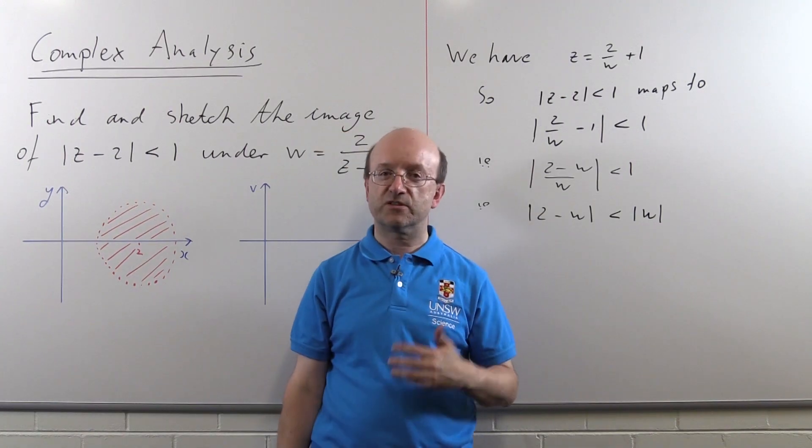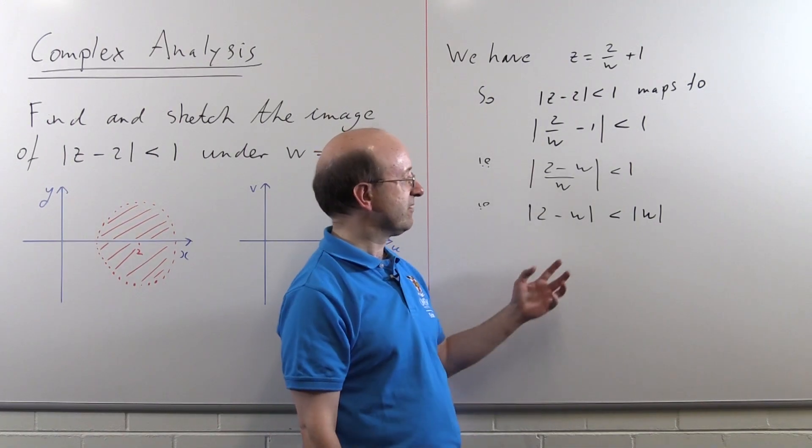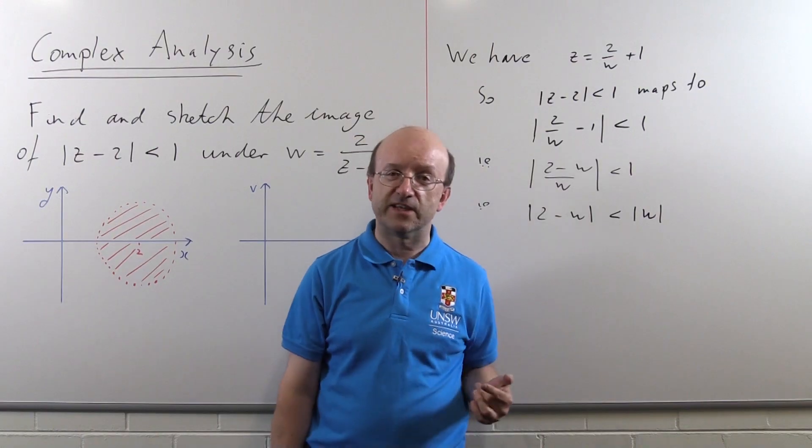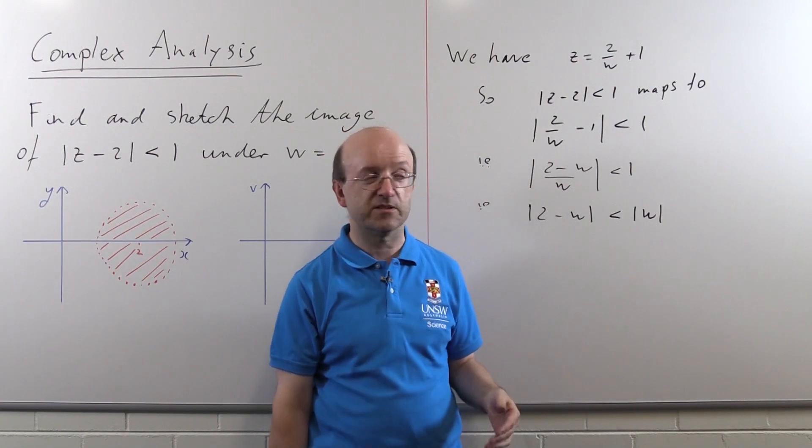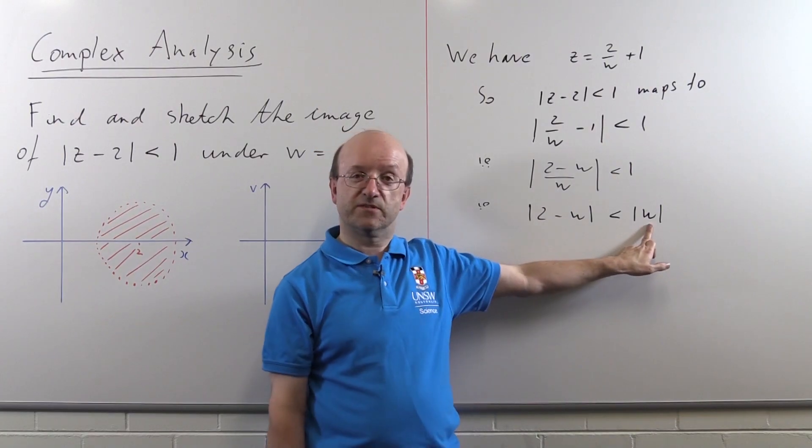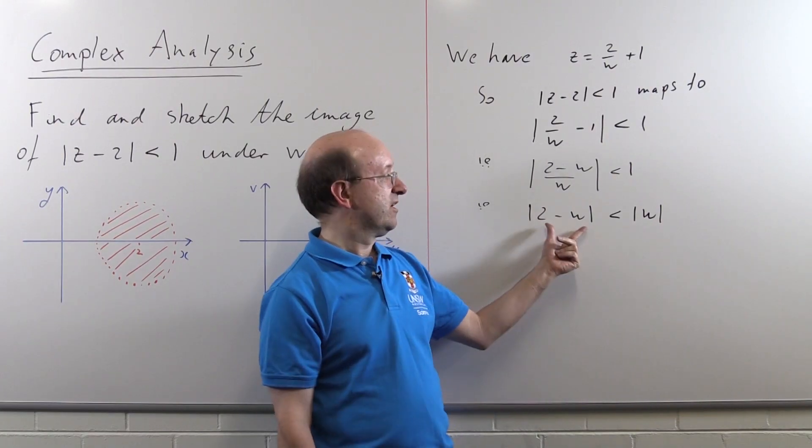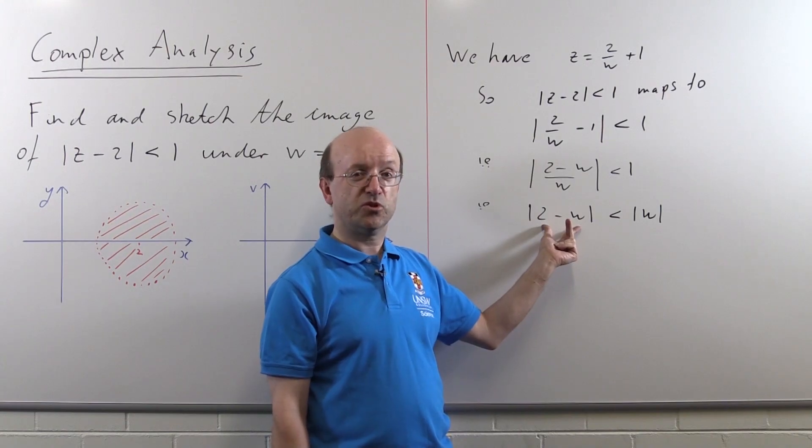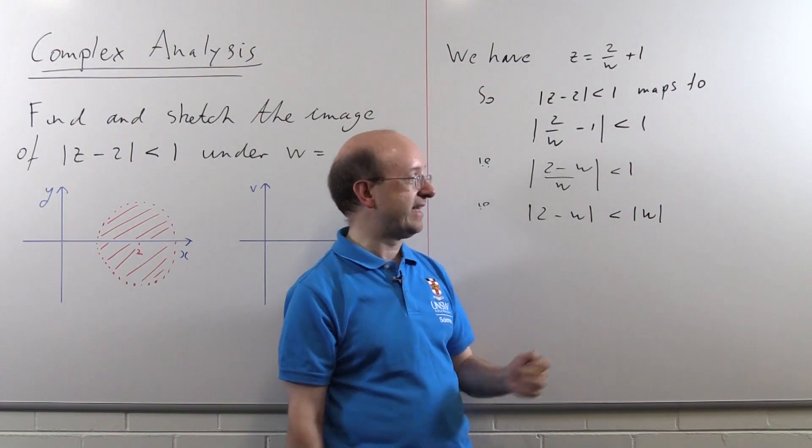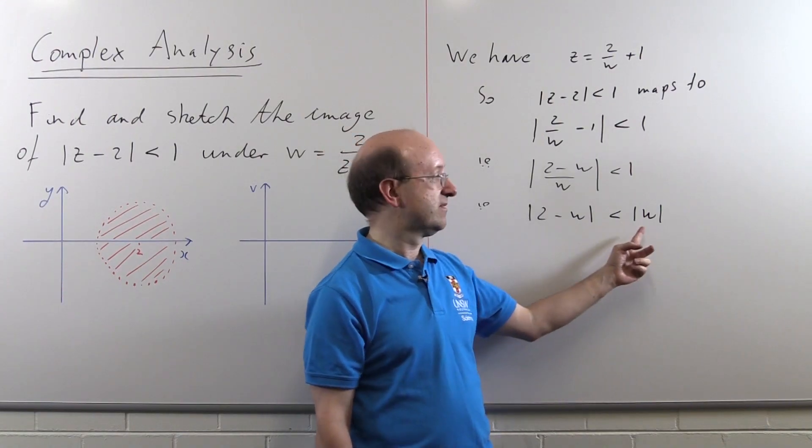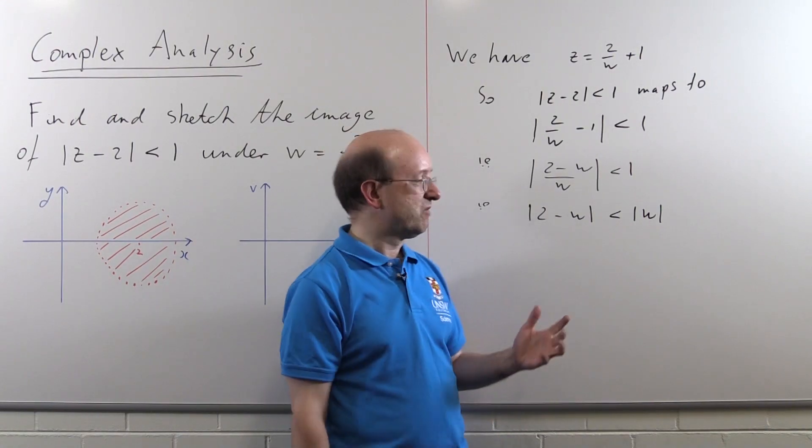We can either do algebra or we can do some geometry to get the answer out. And the geometry, in fact, gets the answer out very quickly. If you remember what the absolute value means, it means a distance. |w| is a distance of w from the origin. |2 - w| is a distance of w from the point 2. So what this is saying is we want all those points in the w-plane that are closer to 2 than they are to 0.